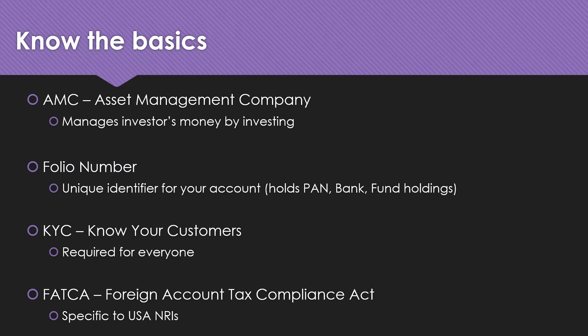Under the folio number you will also see what mutual funds you hold, what you have sold, and all transaction history. Typically people add one bank account under a folio number, but some fund houses accept as many as five bank accounts. If you have a joint account or a partnership deed, you can attach up to ten bank accounts, and you can choose which account to pull money from when purchasing a mutual fund.